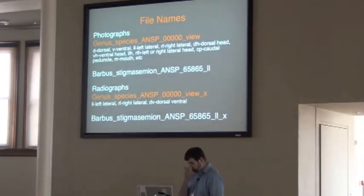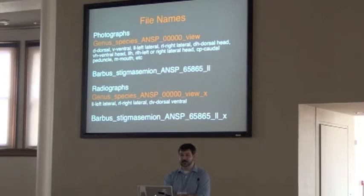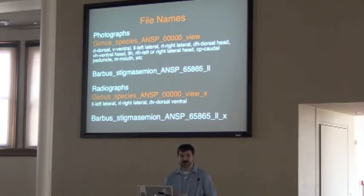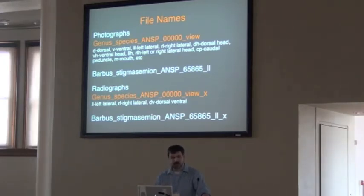For naming a file, we try to keep everything consistent. We start with genus, and we use underscores in place of spaces. The minute you talk to an IT person and they see spaces in your files, they freak out — so we put in underscores. We start with genus, species, then the museum identifier (in our case it's ANSP), the catalog number, and then an abbreviation for the pose.